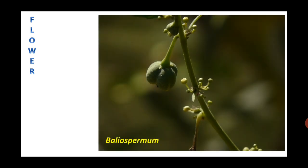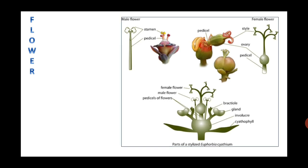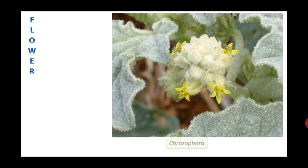Flowers are bractiate, usually bracteolate, and generally unisexual. Monoecious flowers are seen in Baliospermum, meaning male and female flowers are found on the same plant. Dioecious flowers are seen in Bridelia. In Crozophora, sepals are five, united, with valvate aestivation.